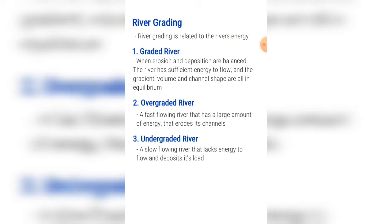The first type is a graded river. This is when erosion and deposition are balanced. The river has sufficient energy to flow and the gradient, volume, and channel shape are all in equilibrium.